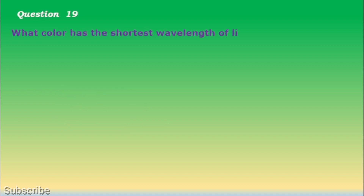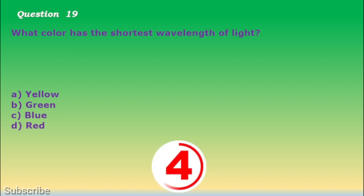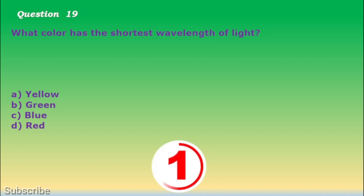Question number 19. What color has the shortest wavelength of light? a. Yellow, b. Green, c. Blue, d. Red. The correct answer is letter c. Blue.